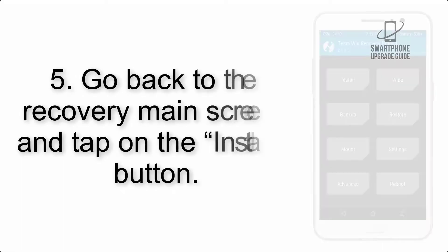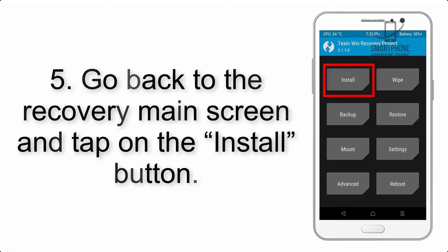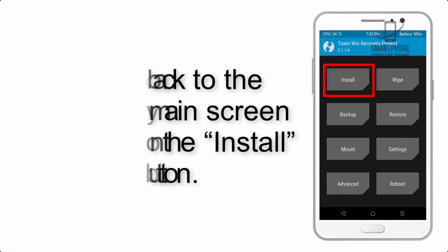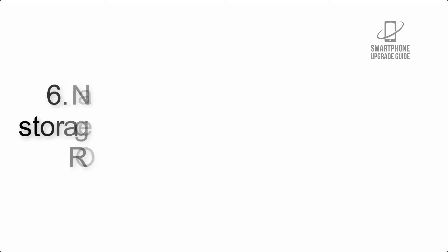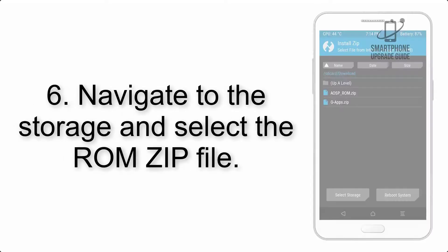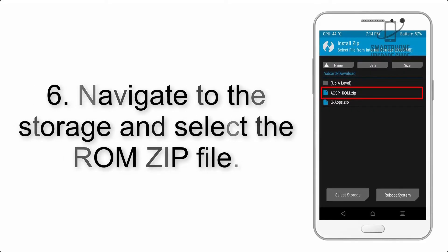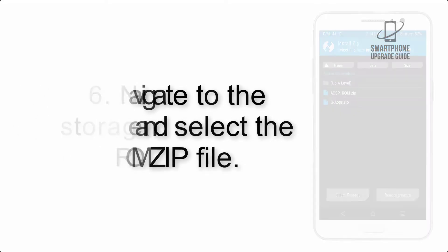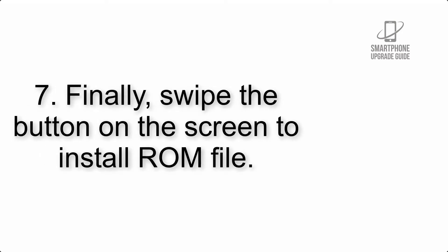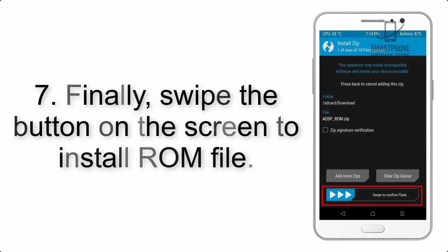Step 5: Go back to the recovery main screen and tap on the Install button. Step 6: Navigate to the storage and select the ROM zip file. Step 7: Finally, swipe the button on the screen to install the ROM file.